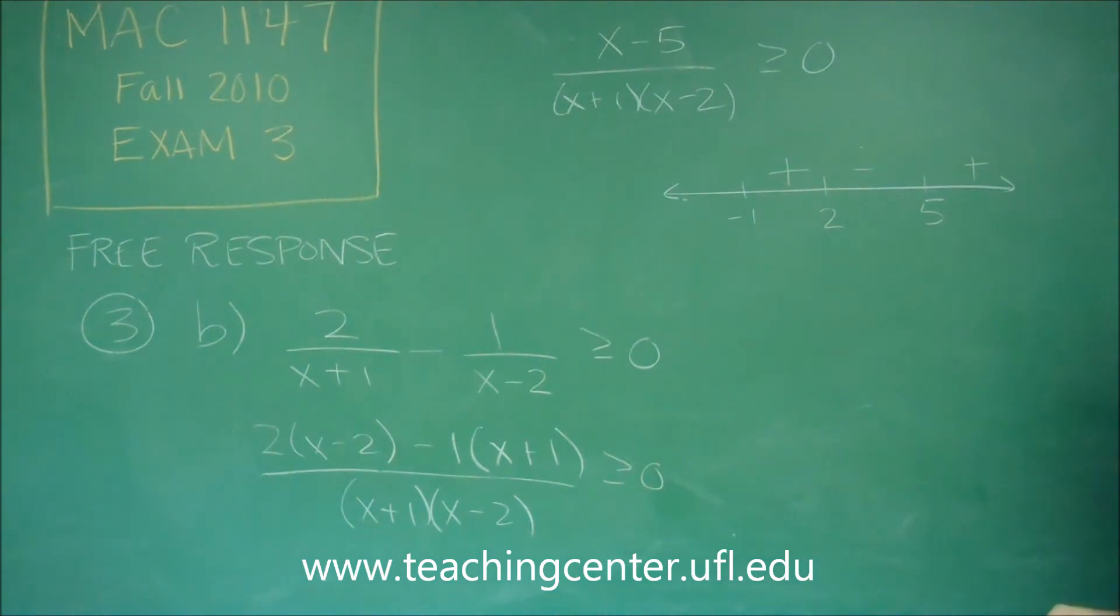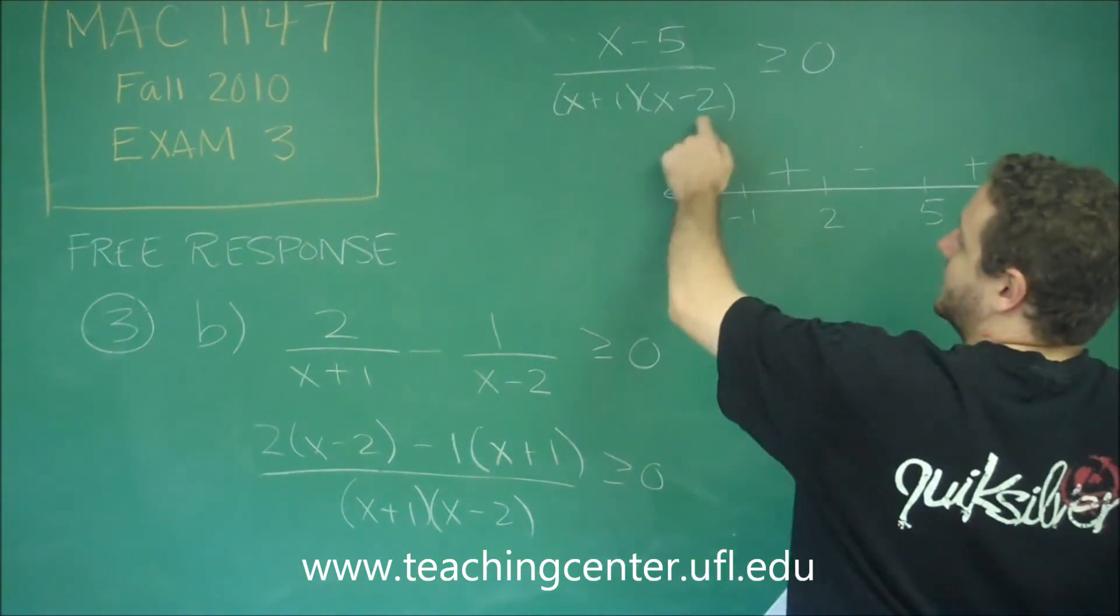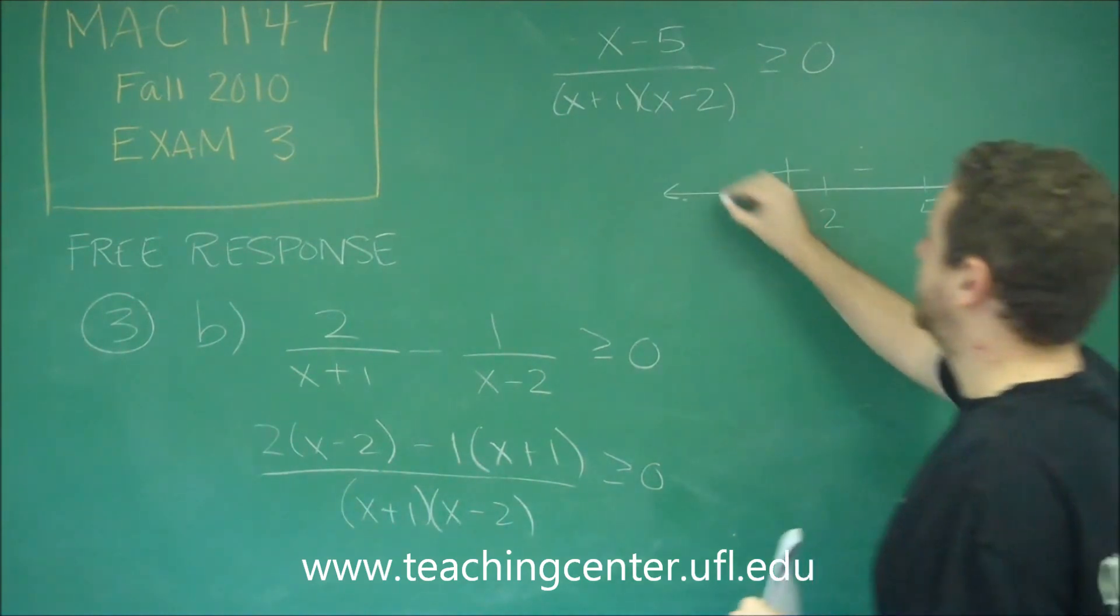And finally something less than negative 1 like negative 2. We are going to get negatives everywhere. 3 negatives there are going to be a negative.